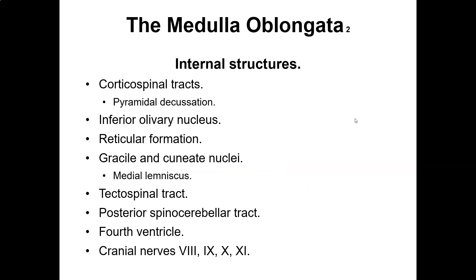The medulla oblongata contains the corticospinal tracts, inferior olivary tracts, reticular formation, tectospinal tract, and posterior spinal cerebellar tract. You have tracts that go up and down the spinal cord to your brain, and these tracts relay motor and sensory information — pain, touch, and so on. Knowing which tracts are affected when working with a neurological patient would help you significantly.